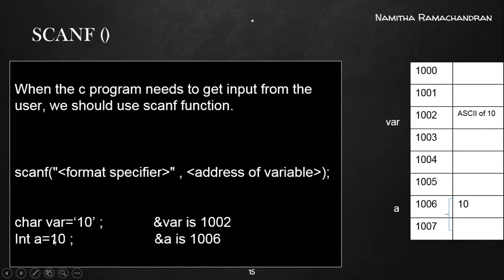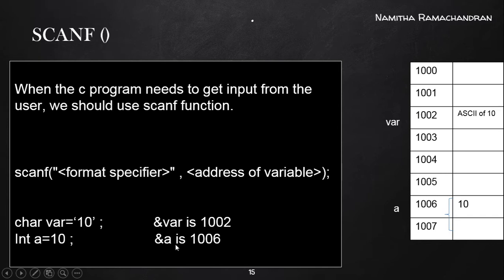The next declaration is int a = 10. This indicates that in memory there is a label 'a' pointing to memory address 1006. Since 'a' is of type integer, it occupies two consecutive bytes starting from address 1006. The variable 'a' points to the first byte address 1006, so &a gives the address 1006.